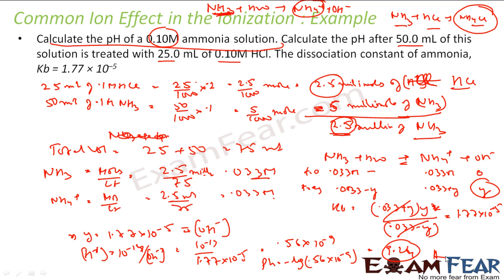The trick here was that the moment you add HCl, it consumed the OH− and also created NH4+. So when we start the new equilibrium reaction, NH3 has the new value 0.033 M and NH4+ also has the value 0.033 M as the initial concentrations.